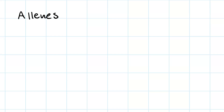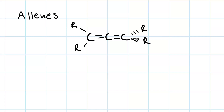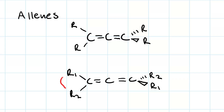Allenes are another example of compounds that can be chiral without having a chirality center. An allene contains a central carbon that has a double bond on both sides of it, with four R-groups. These are chiral when the R-groups on each of the peripheral carbons are mismatched. So as long as you have a mismatch here and a mismatch here, you can have a chiral allene.